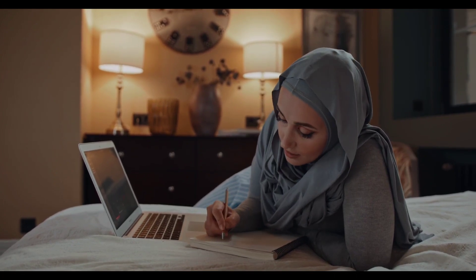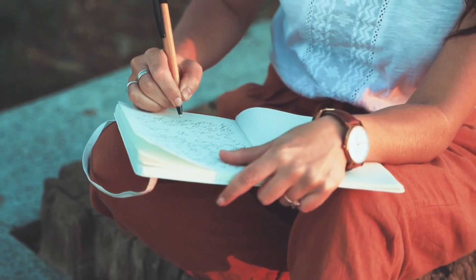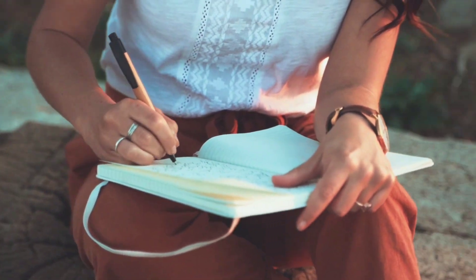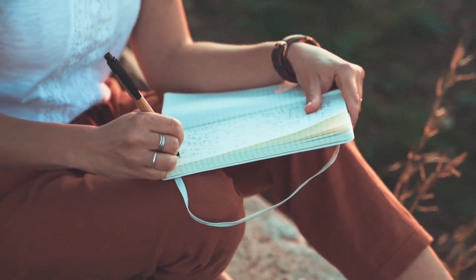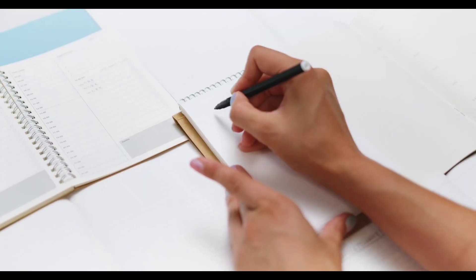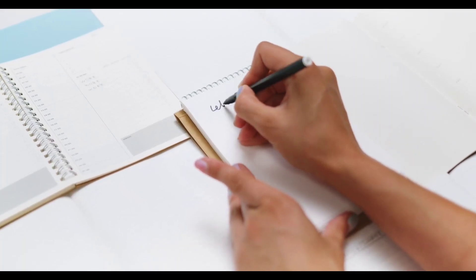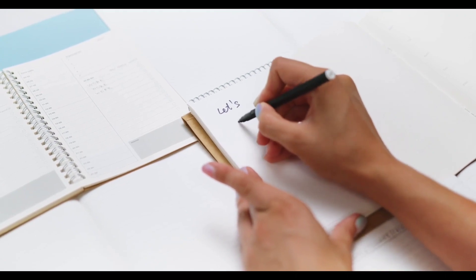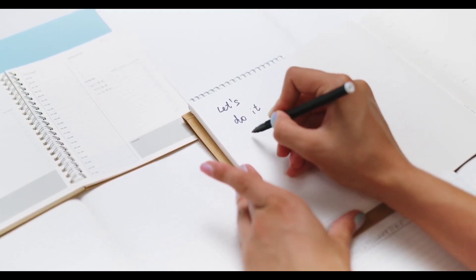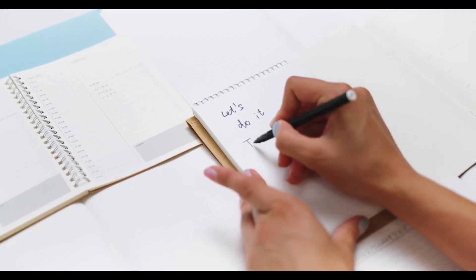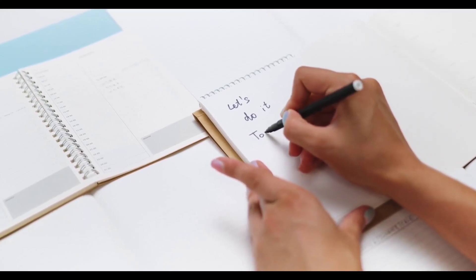43. Some pens have hidden features, like a stylus tip for use on touchscreens. 44. There are pen collectors who actively seek out and trade vintage and rare pens. 45. A pen addict is someone who is particularly passionate about pens and stationery. 46. The Pen Olympics is an event where participants compete in various writing and drawing challenges.